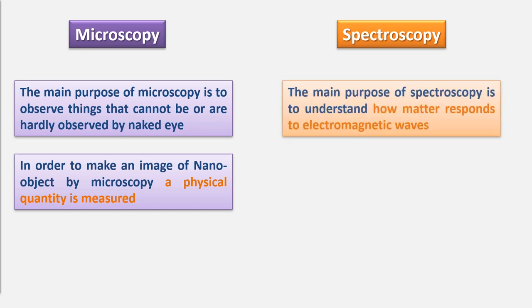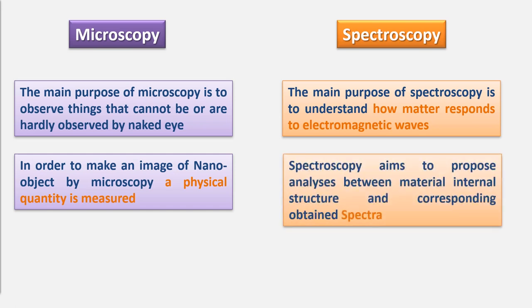On the other hand, the main purpose of spectroscopy is to understand how matter responds to light or electromagnetic waves in general. Spectroscopy aims to propose analysis between material internal structure and corresponding obtained spectra. It classifies materials according to their reaction to light, depending on the wavelengths of electromagnetic radiation used and the type of interaction with matter that occurs, like absorption, scattering, etc.